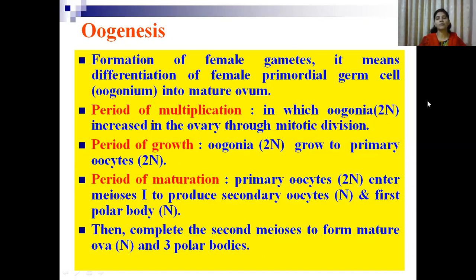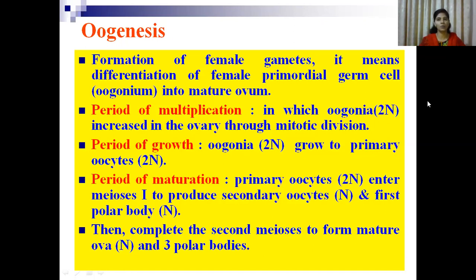Just like spermatogenesis, the oogenesis process also has three phases: the period of multiplication, the period of growth, and the period of maturation. The period of multiplication is the same in spermatogenesis and oogenesis — it involves the conversion of primordial germ cells into oogonia by mitotic cell division, forming diploid oogonia. In spermatogenesis, diploid spermatogonia are formed; similarly in oogenesis, oogonia are formed.